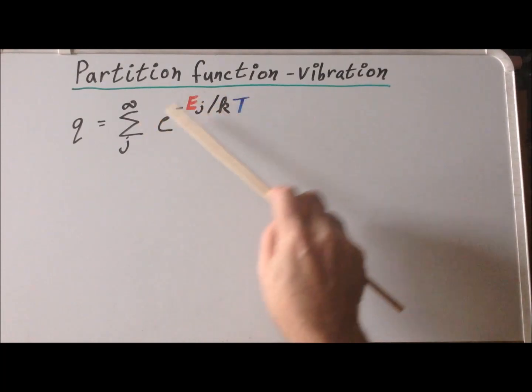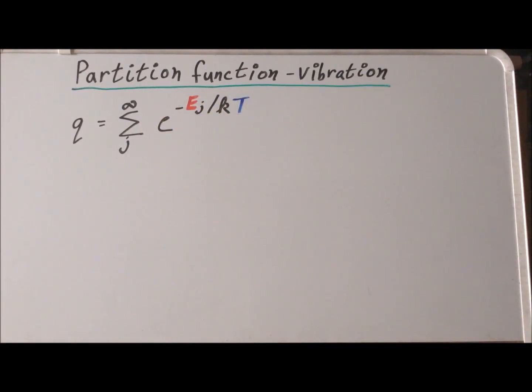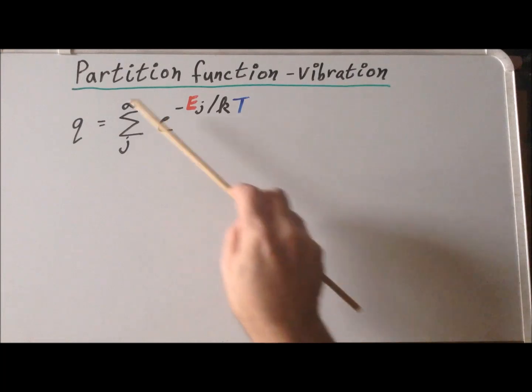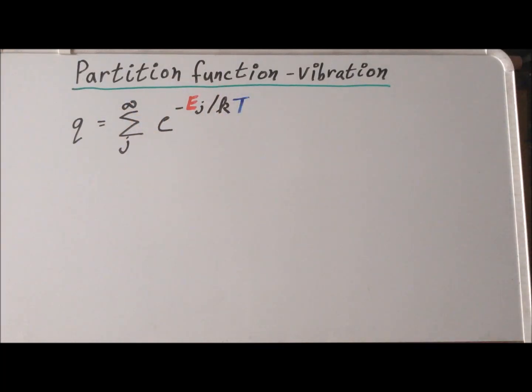So we have this quantity minus E sub j divided by kT, which we raise as a power of the base of natural logarithms e, and we sum over all those possible combinations. This is a recap of the definition of the canonical ensemble partition function.